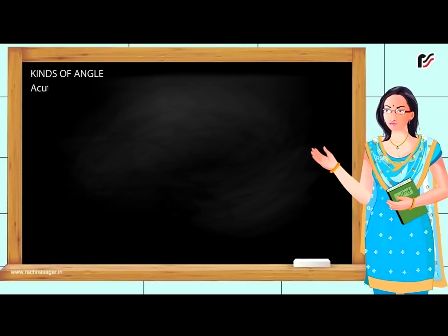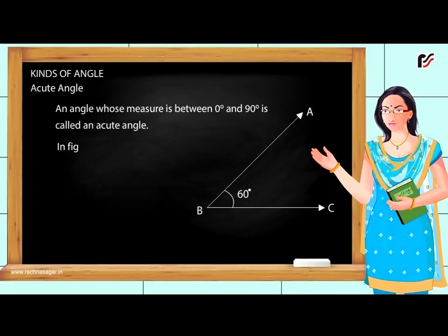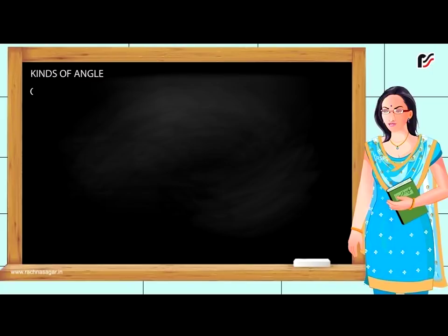Kinds of Angle: Acute Angle - An angle whose measure is between 0 degrees and 90 degrees is called an acute angle. In the figure, angle ABC is equal to 60 degrees. Therefore, ABC is an acute angle.